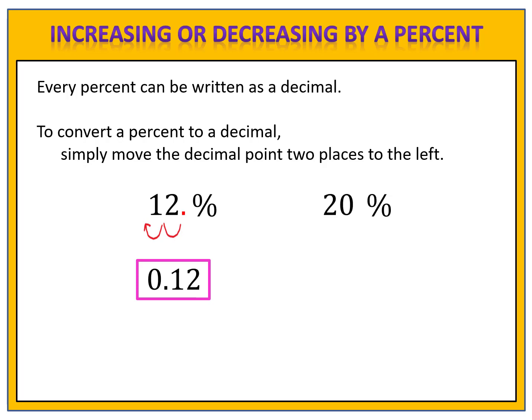Here's one for you to try. Can you write the number 20% as a decimal? We begin by adding the decimal point since one is not already written. We then move our decimal point two places to the left: 0.20. There's no need to write the zero at the end, so we can simply write 0.2. Writing 0.2 is equivalent to writing 20%.